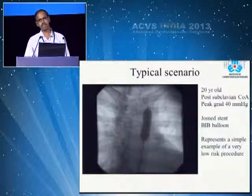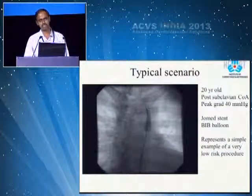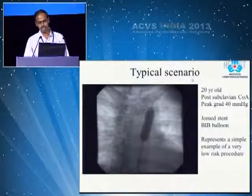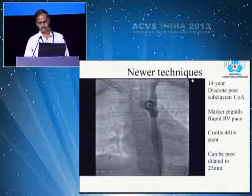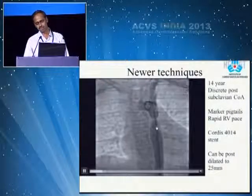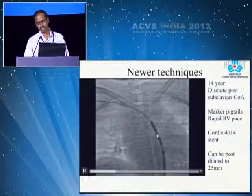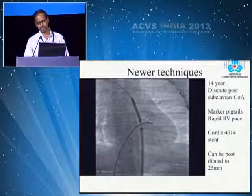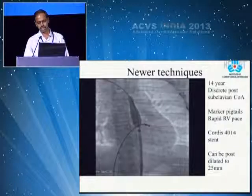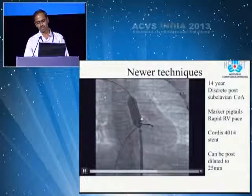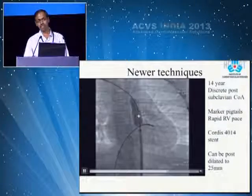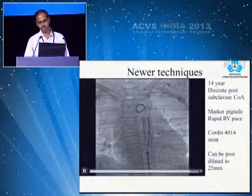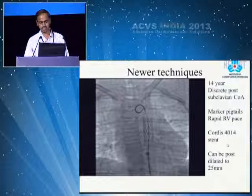Why not use the balloon-in-balloon in every patient? It comes at the cost of a large sheath size — often requiring a 12-French sheath — so today it is not one of the preferred balloons for coarctation stenting. Instead, we use a marker pigtail more often in recent years to be very exact. We position the stent midway, and to avoid stent migration, we rapid-pace the right ventricle and expand the stent with a Max CLD (CORDIS) or a Boston Scientific XXL balloon. This is a CORDIS 4014 stent, which can be post-dilated up to 25 mm if situationally needed.